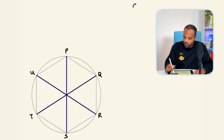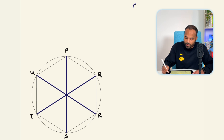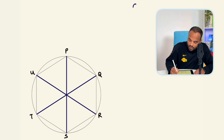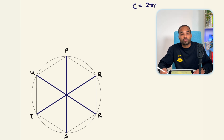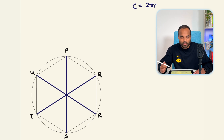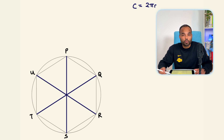I'll start with the circle because that'll be the easiest. The perimeter of a circle — or the circumference — is 2πr. We know the radius of the circle is r centimeters, as stated in the question. So the perimeter of the circle is 2πr.